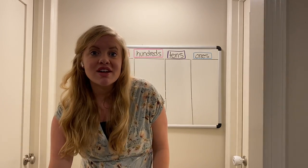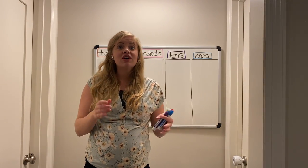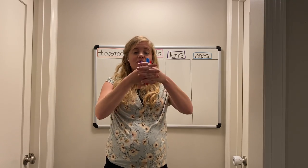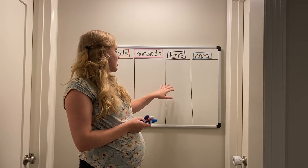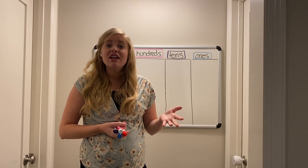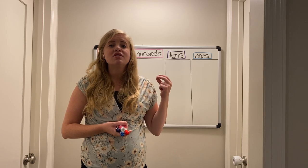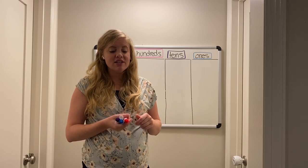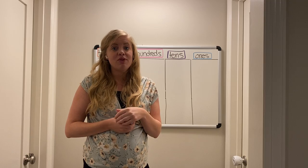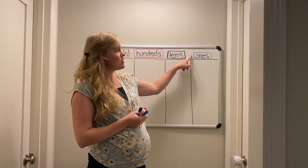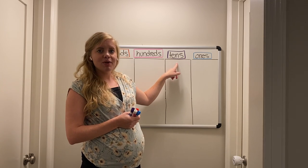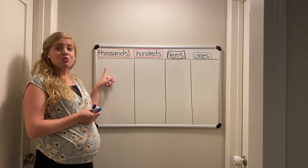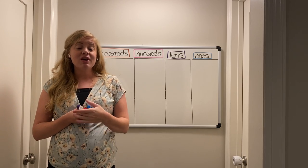If you know anything about Mrs. Halverson, you're going to learn that she is not perfect and not a great drawer. So if I were to draw out all the ones, tens, hundreds, and thousands, it would take a really long time. Mathematicians like to be quick and get to the answer. So today, instead of using base 10 blocks, I'm going to use different colors: ones are blue, tens are purple, hundreds are pink, and thousands are red.